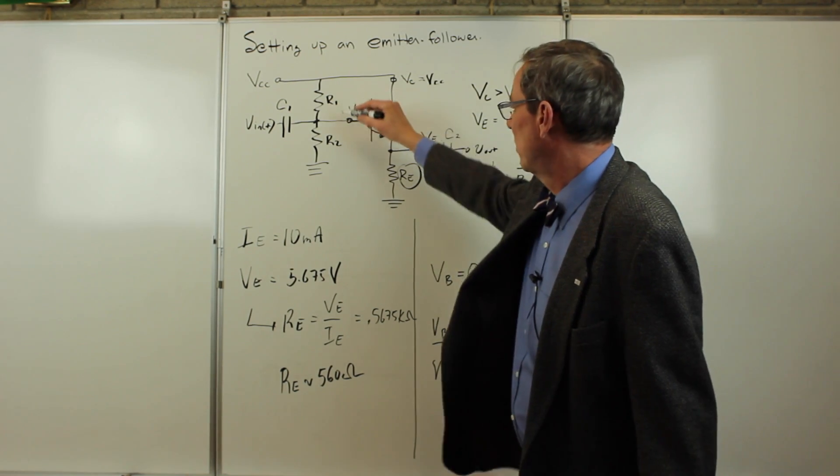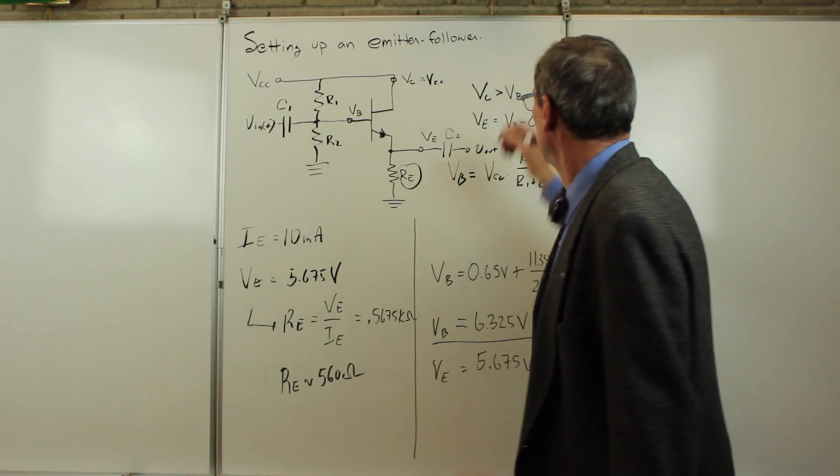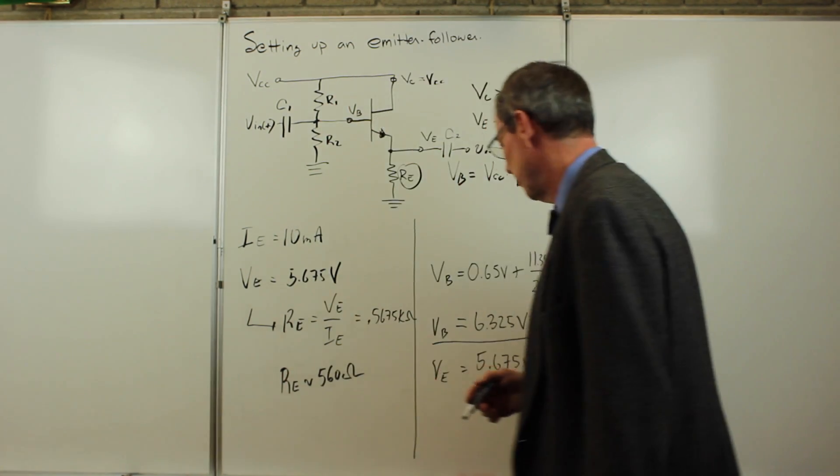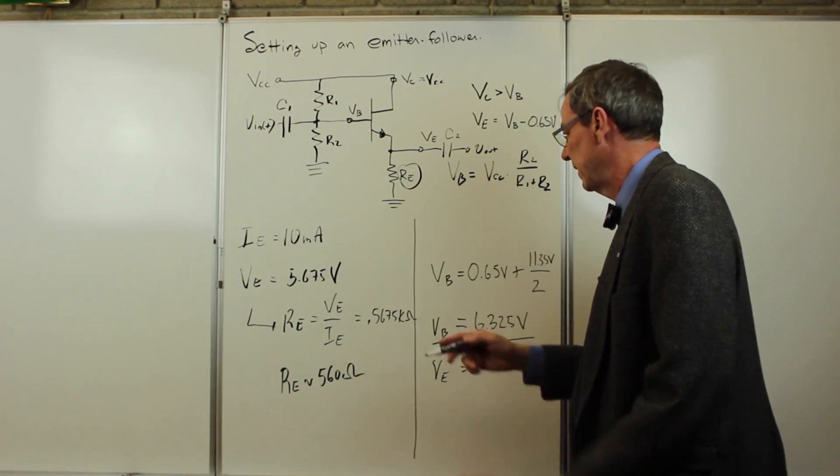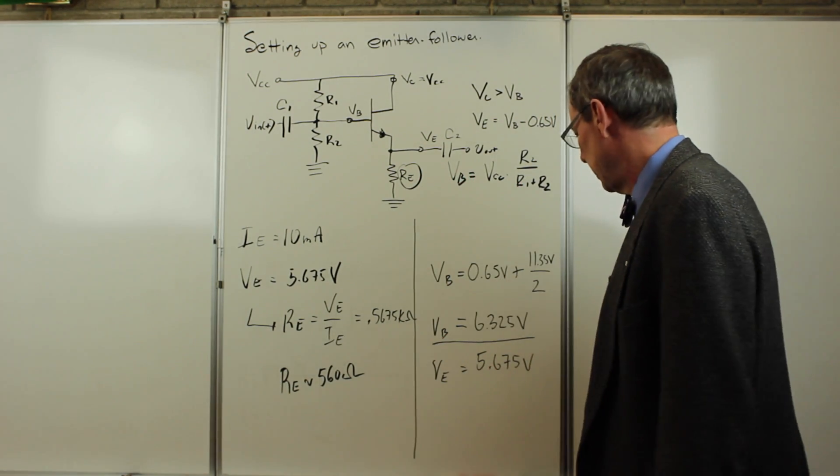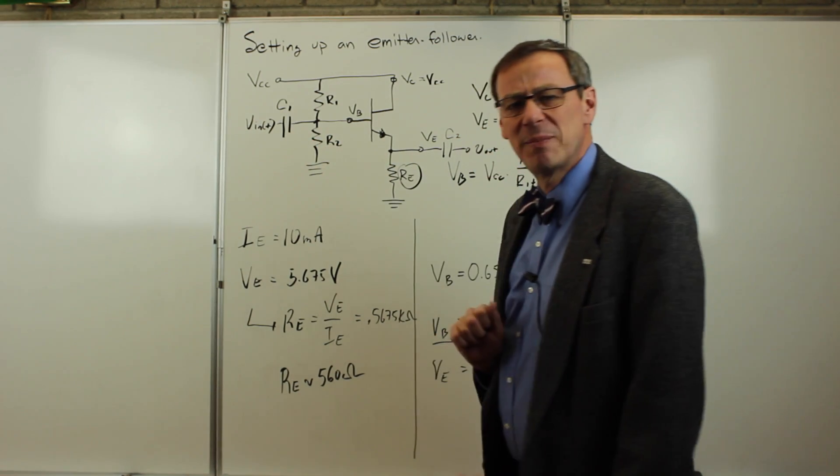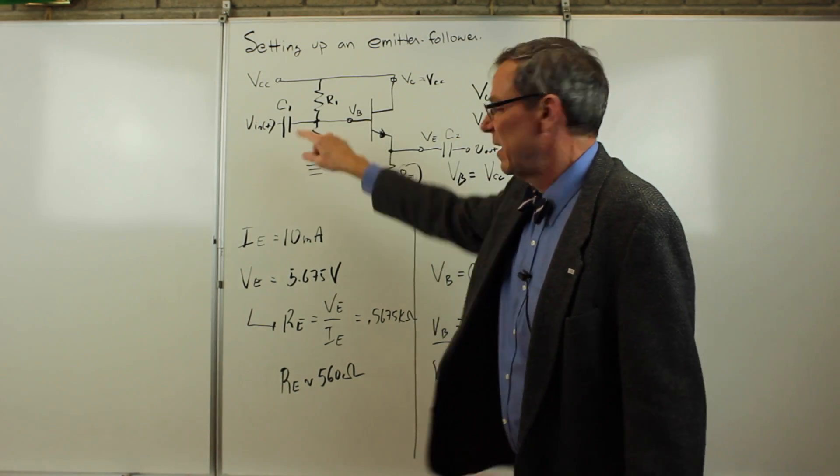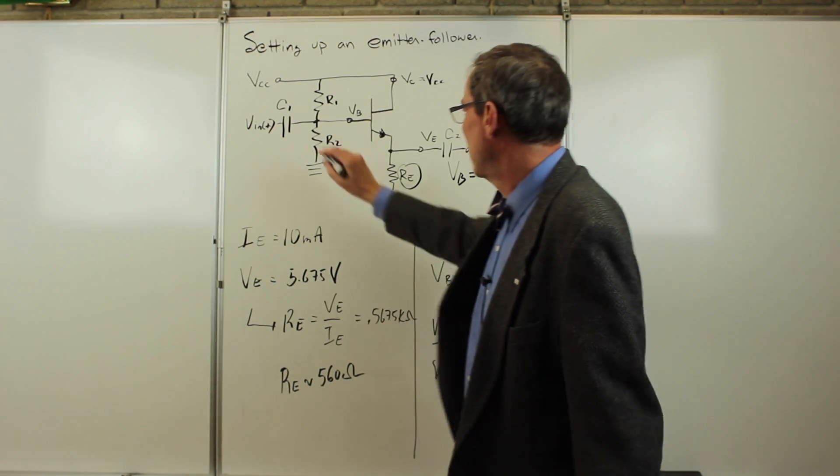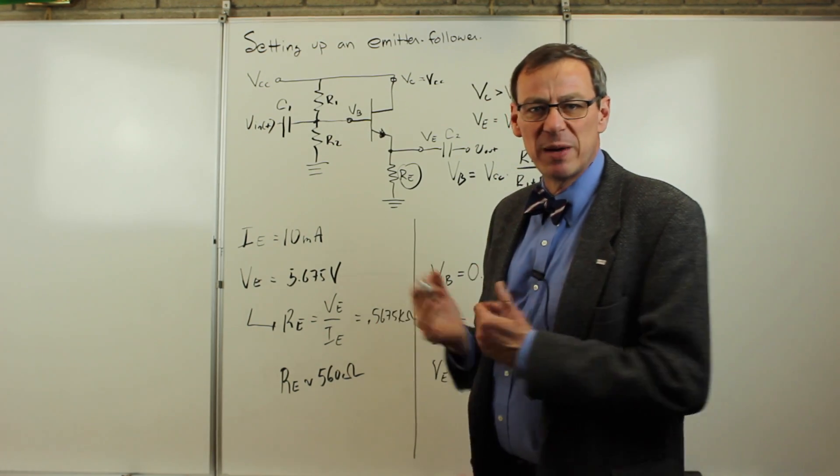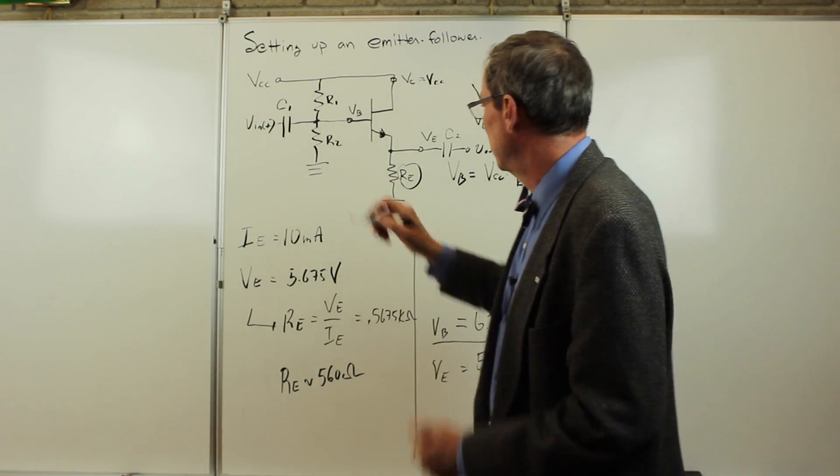Now we've got values for R1, R2, each of these about a kiloohm, whatever we picked, and RE is about half that. That biases things correctly. Last thing we need to do is decide what these capacitors are going to be. They act like a high-pass filter. High-pass filter is a capacitor and then a resistor to ground, and we're worried about what the paths are to get to ground here.